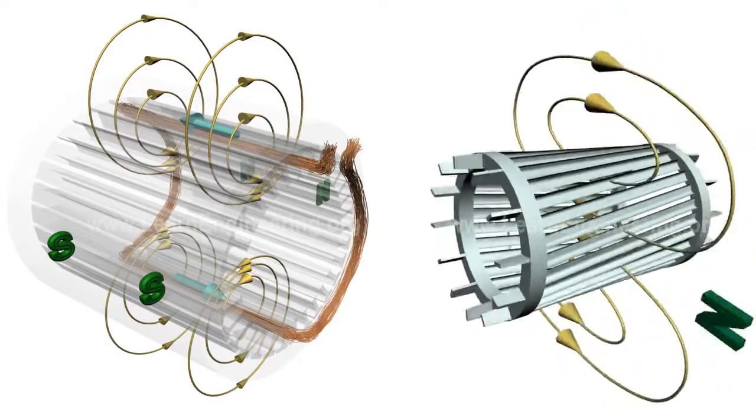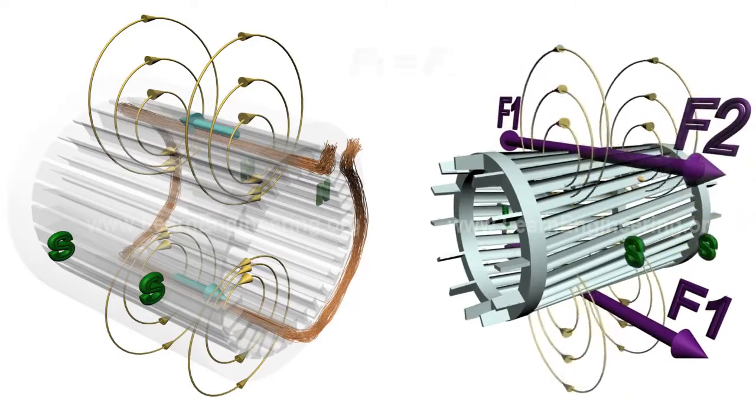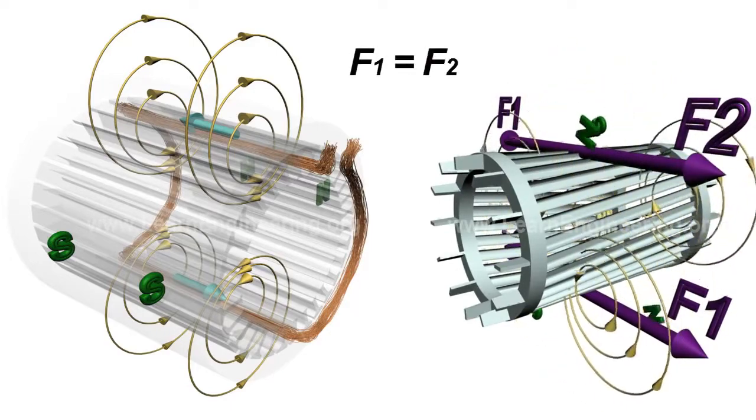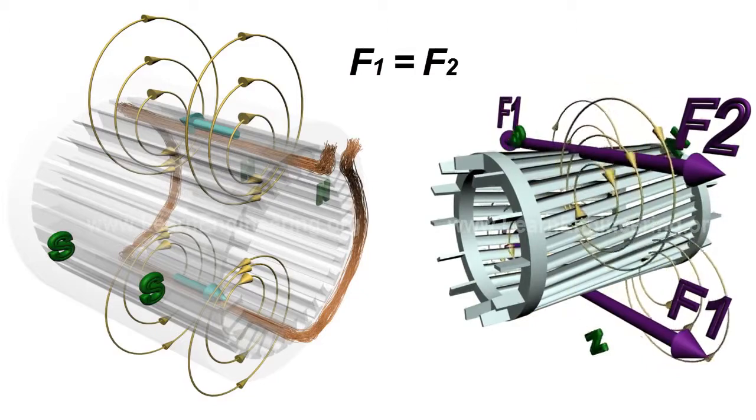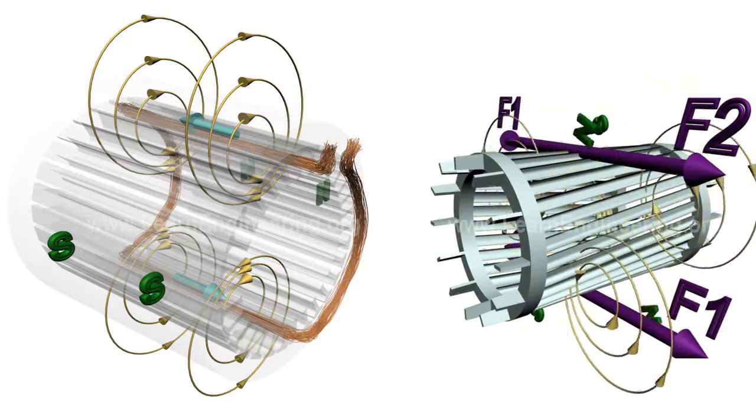But here we have got two such oppositely rotating magnetic fields. So torques produced by them will be equal and opposite. Net effect will be zero torque on rotor. So rotor won't start, it will simply buzz.